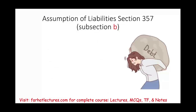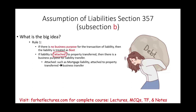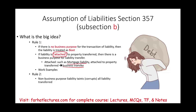Now let's look at Section 357 subsection B. Under subsection B, we have two rules. Rule one: if there is no business purpose for the liability, the liability is treated as a boot. If the liability is attached to the property, there is a business purpose. So whether or not the liability is attached, and whether or not there is a business purpose, determines the treatment. Rule two: a non-business purpose liability taints all liabilities transferred.